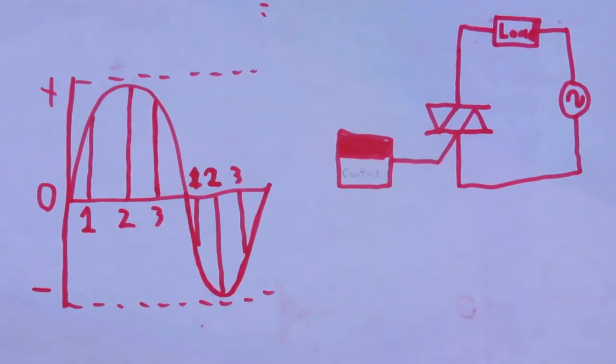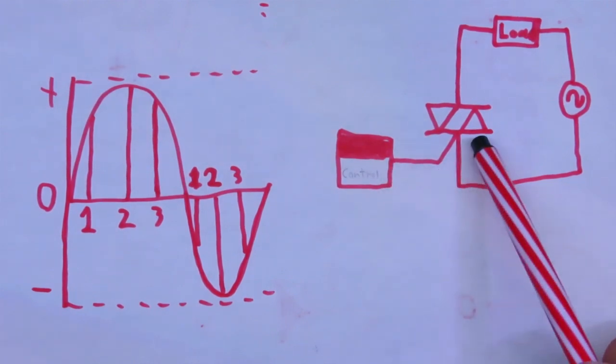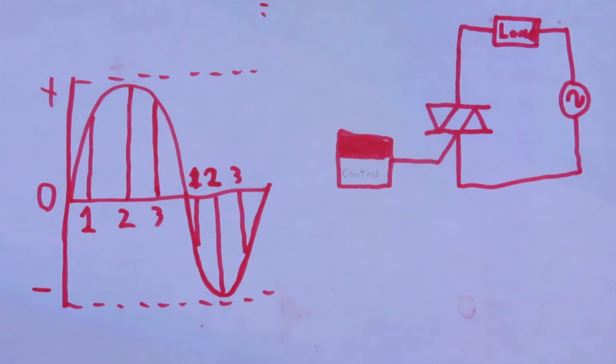So, a circuit a triac can be very useful in is a phase control circuit. So, you have your controller here. Let's send a signal to the gate of the SCR every time it wants it to turn on. And that will control our load.